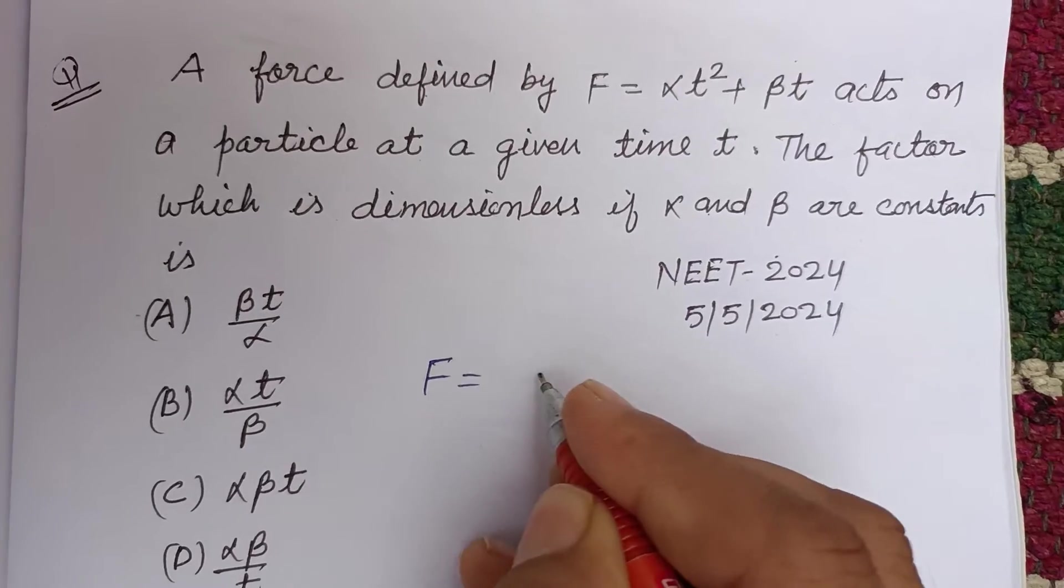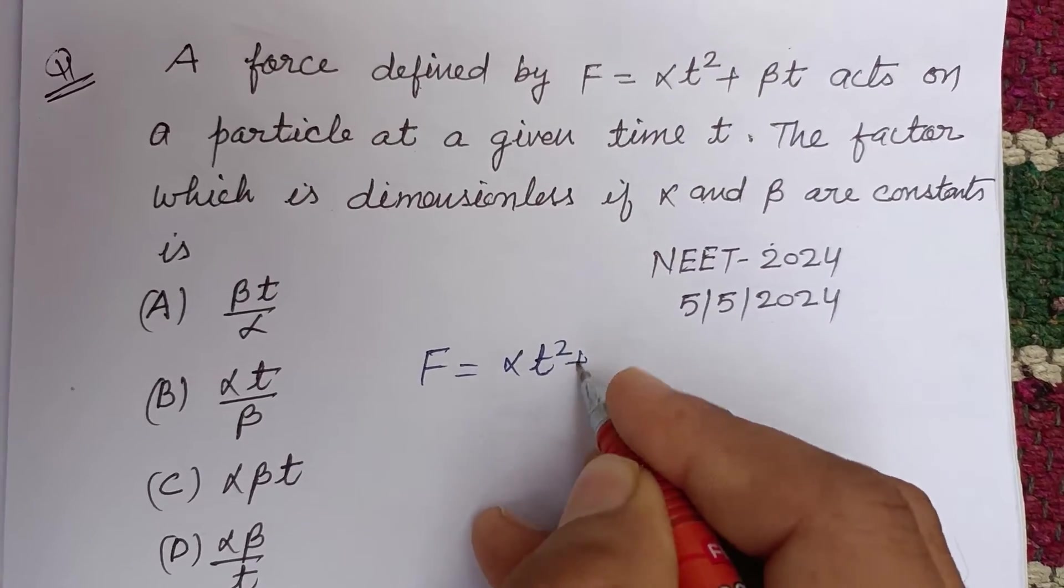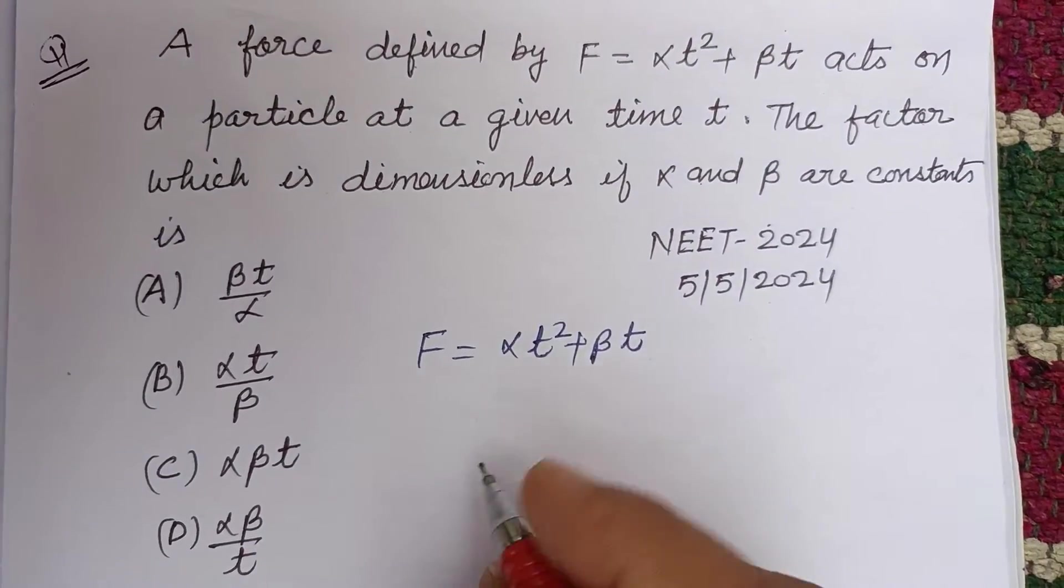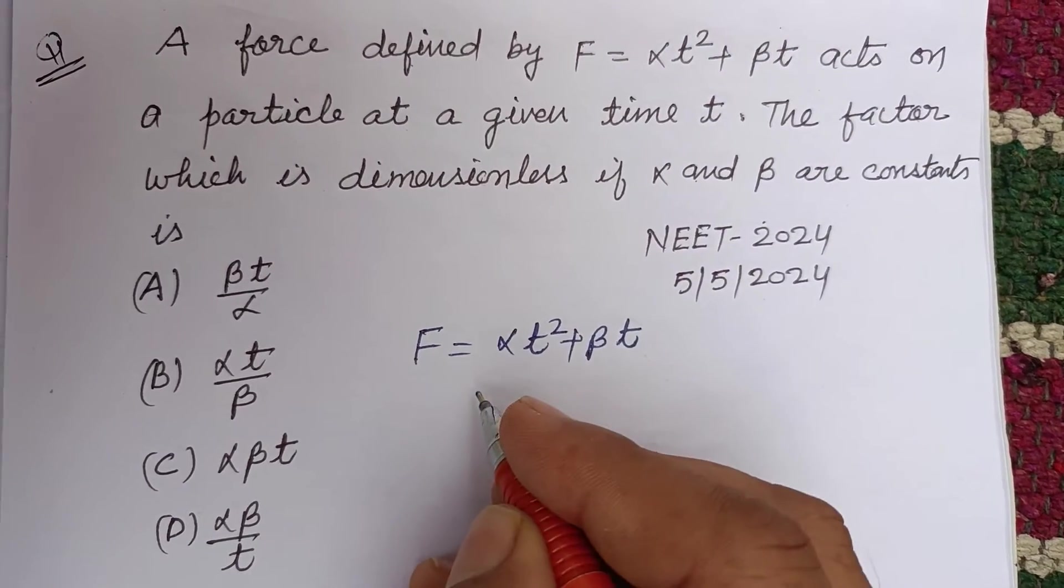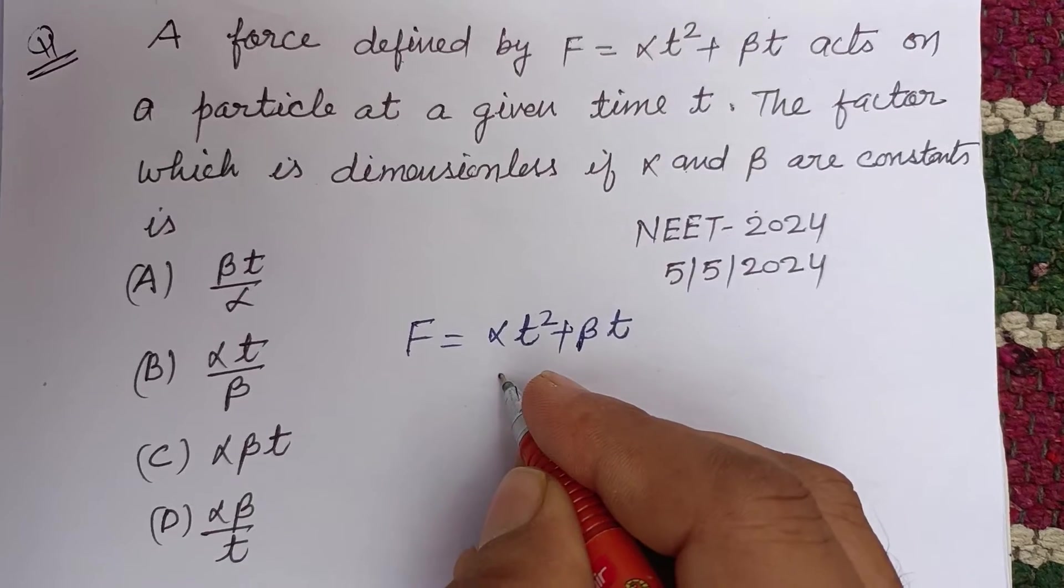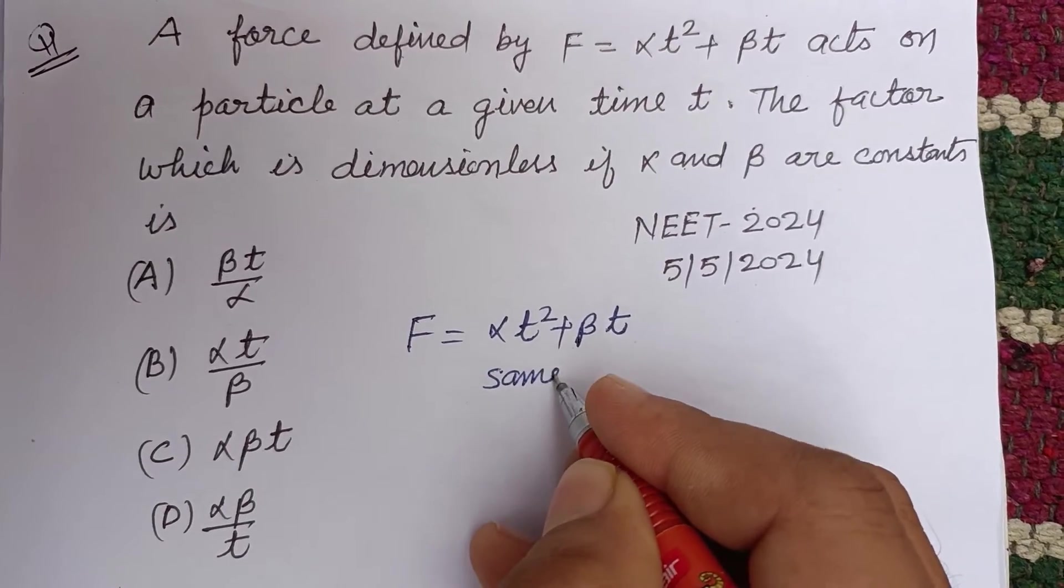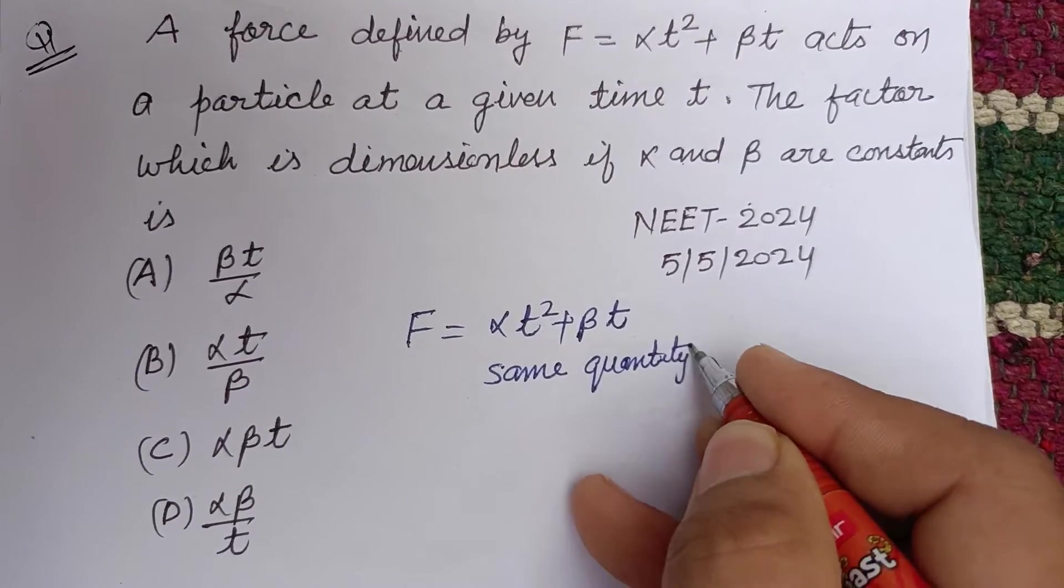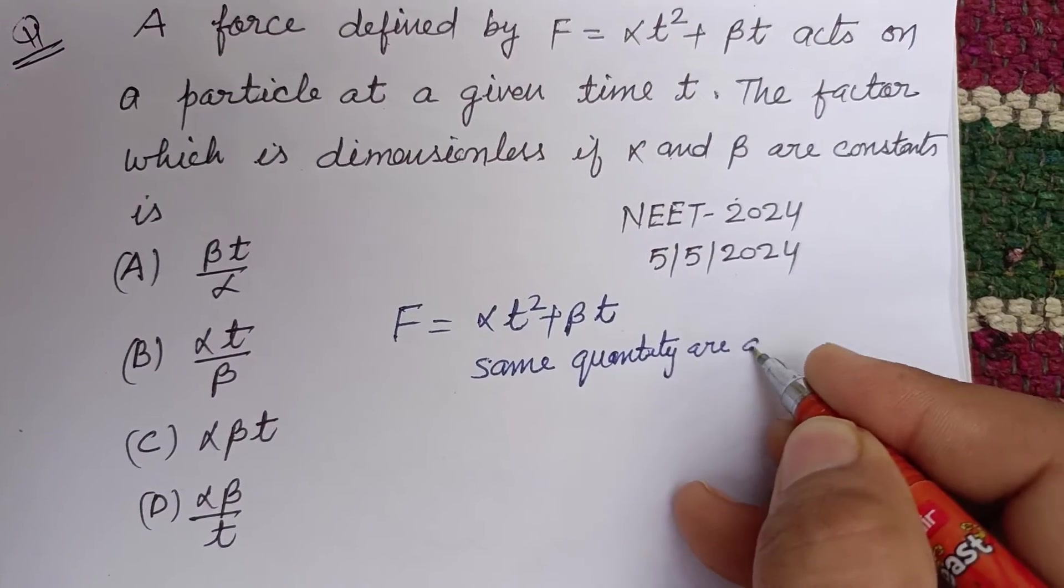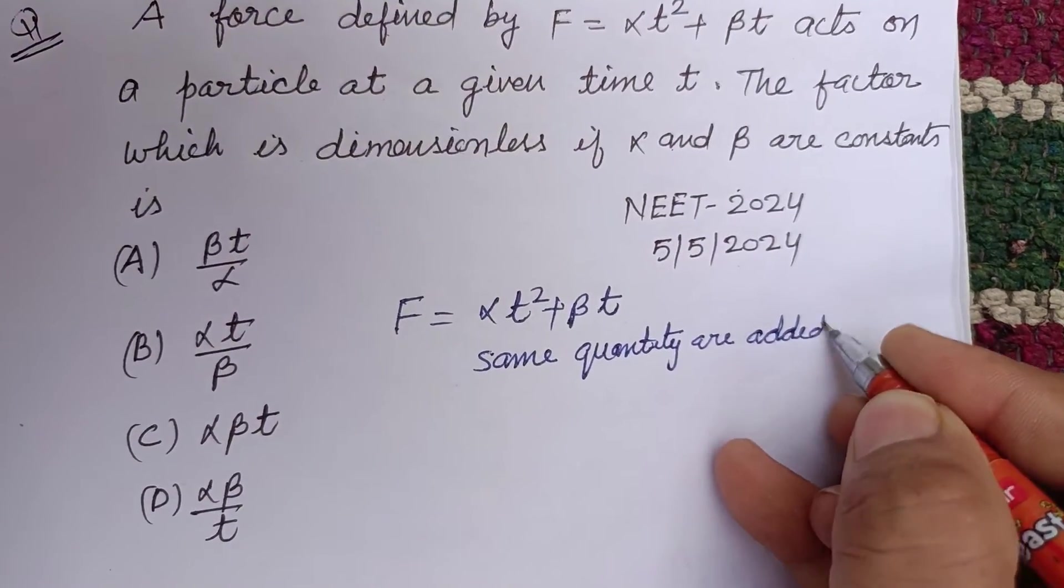Here force is given as alpha t squared plus beta t. Here this is force, then this side is also force. Same quantity, same quantity are added or subtracted.